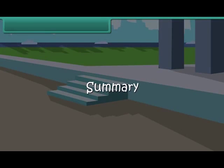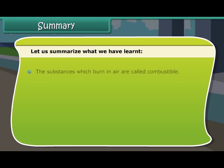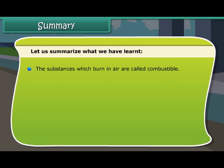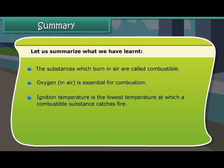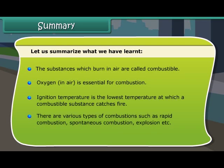Let us summarize what we have learned. The substances which burn in air are called combustible. Oxygen in air is essential for combustion. Ignition temperature is the lowest temperature at which a combustible substance catches fire. There are various types of combustion such as rapid combustion, spontaneous combustion, explosion, etc.